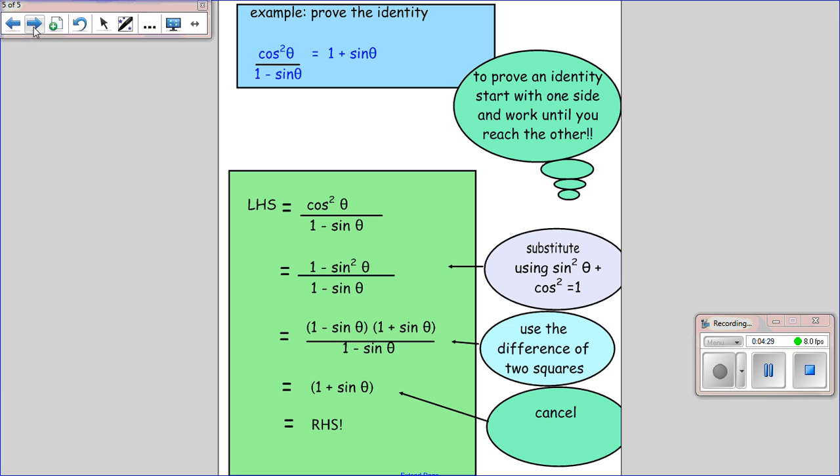So let's prove this identity, cos squared theta over 1 minus sine theta equals 1 plus sine theta. Again, this time I'm going to start on my left-hand side. So say what I'm doing. Write it out.